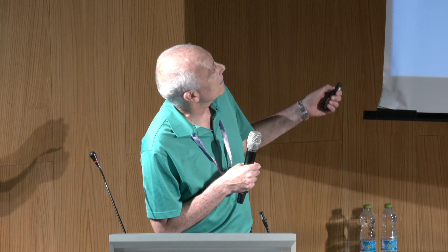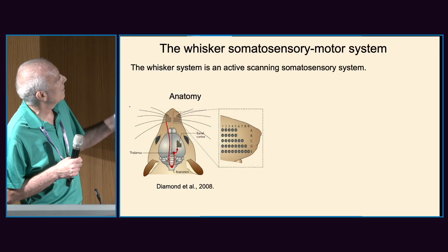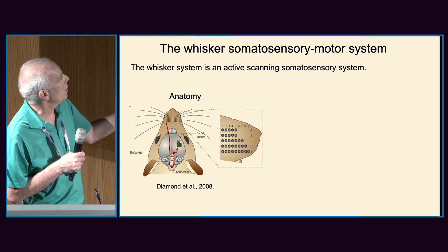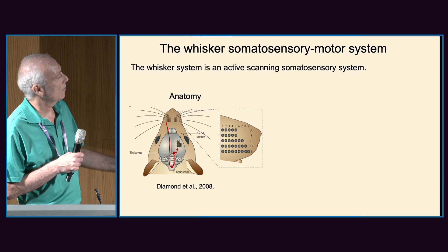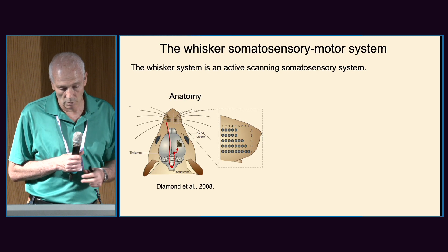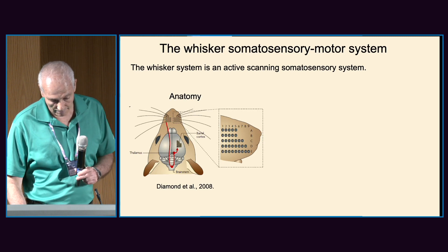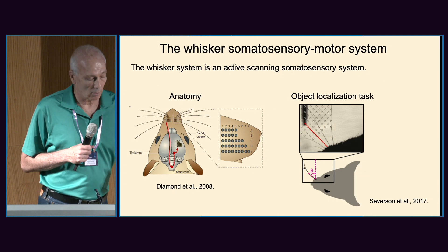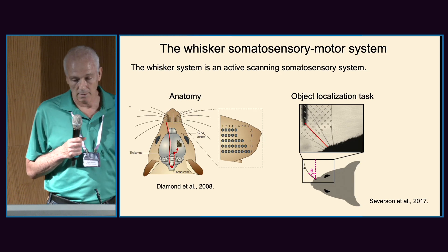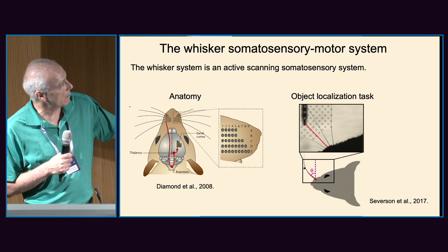This is the whisker somatosensory motor system of rodents — an active scanning somatosensory system. Rodents have two matrices of whiskers, one emerging from each cheek. There are about 30 whiskers or vibrissae on each side, organized in five rows, with between five to nine vibrissae per row. This is a major sensory modality for rodents; they can carry out object localization tasks using only their whiskers.